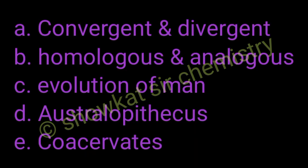Then we have short topics like convergent and divergent evolution — you should have a concept of homologous and analogous organs. Similarly, for the evolution of man, a brief overview is enough; you just need to know about Australopithecus and also what Coacervates are.